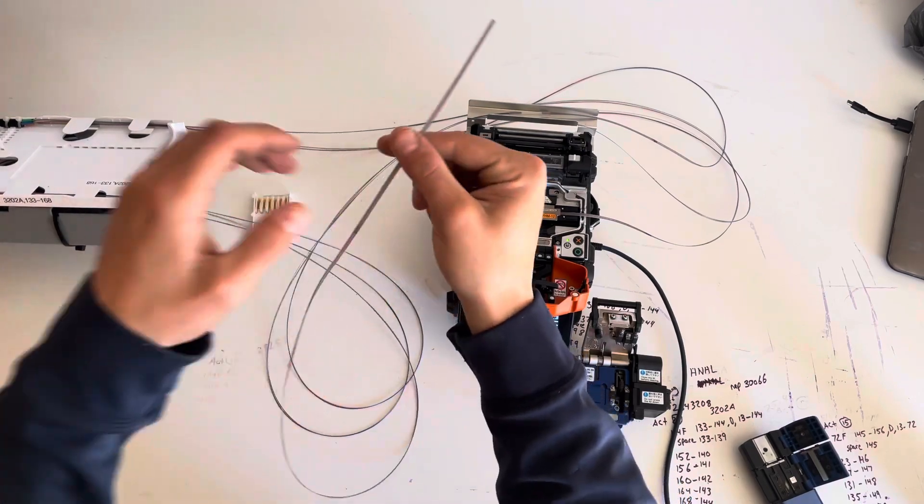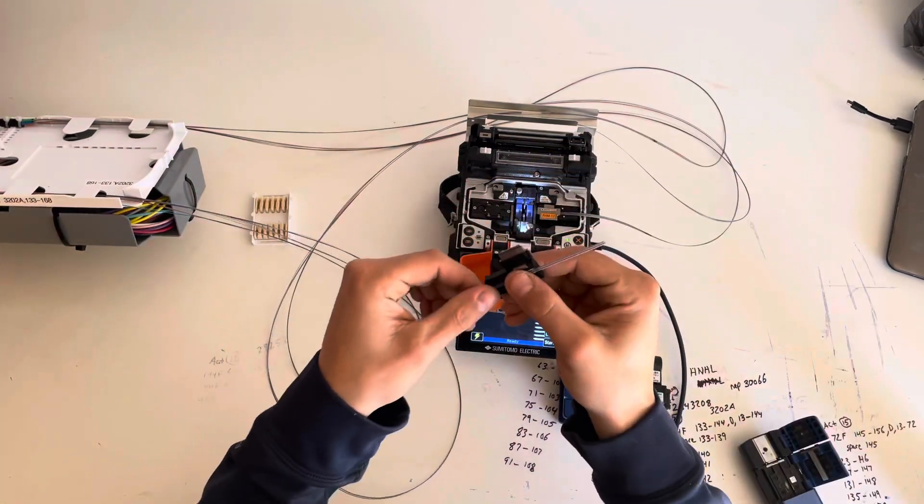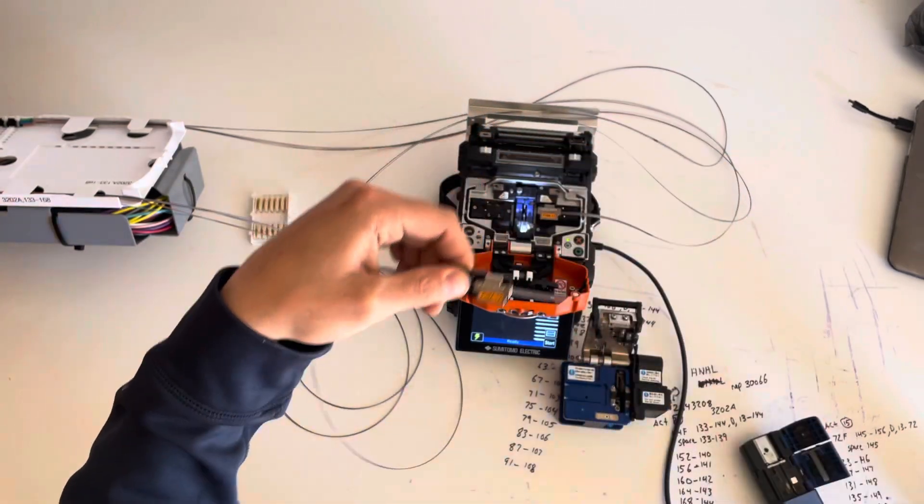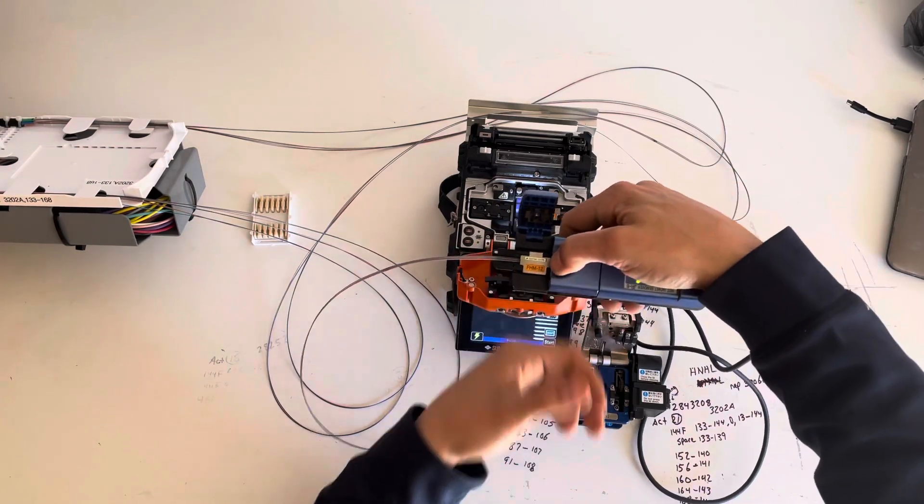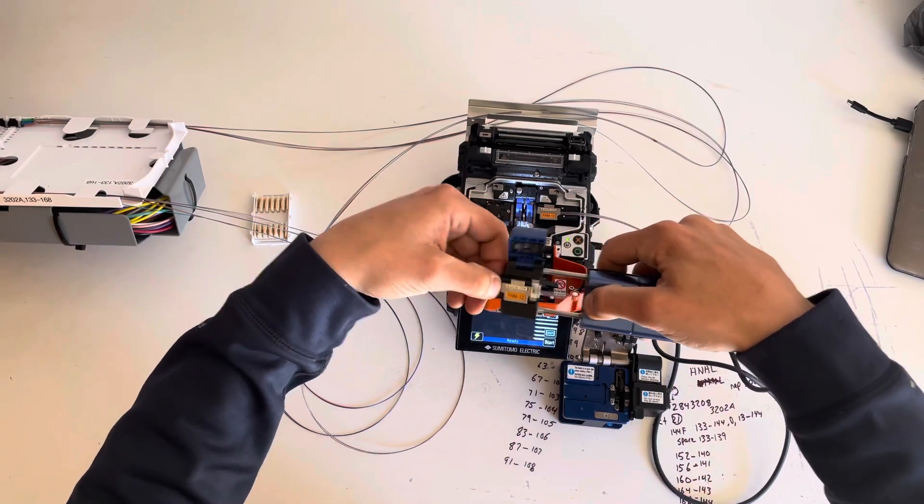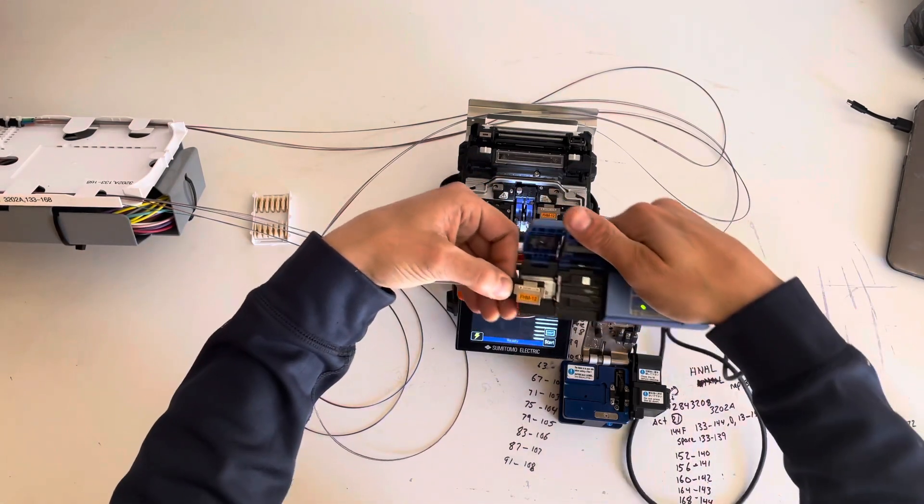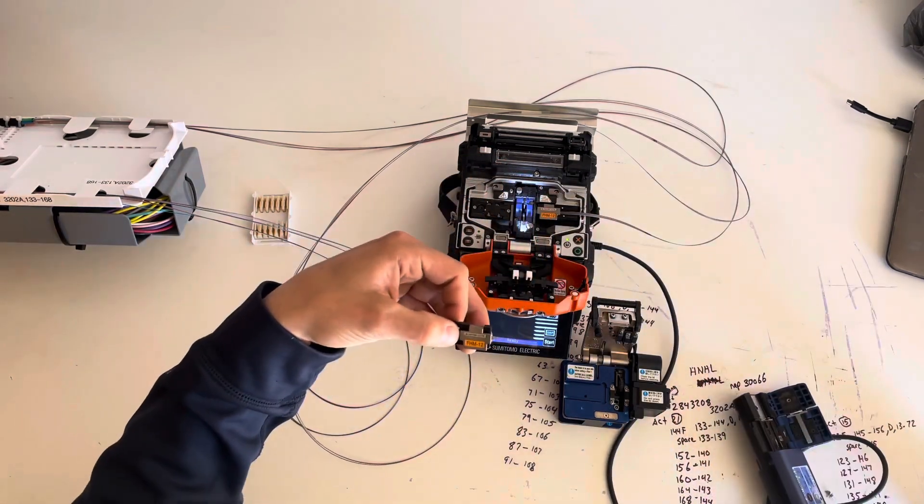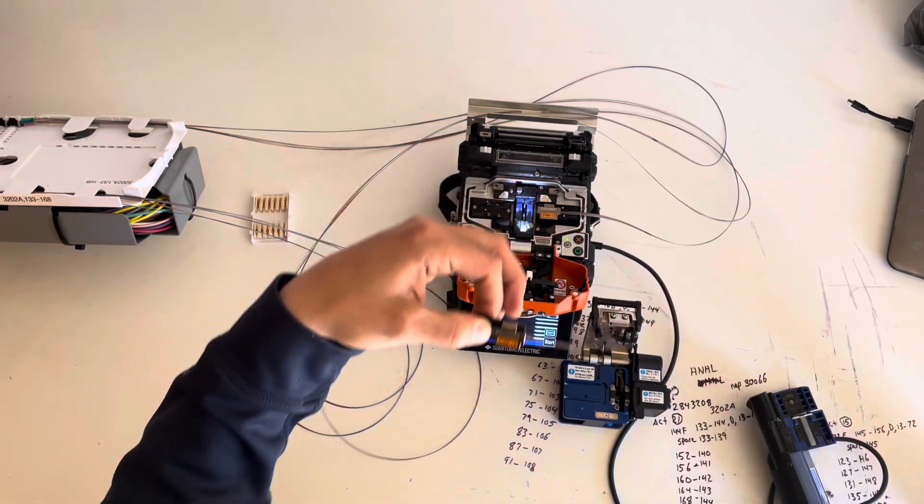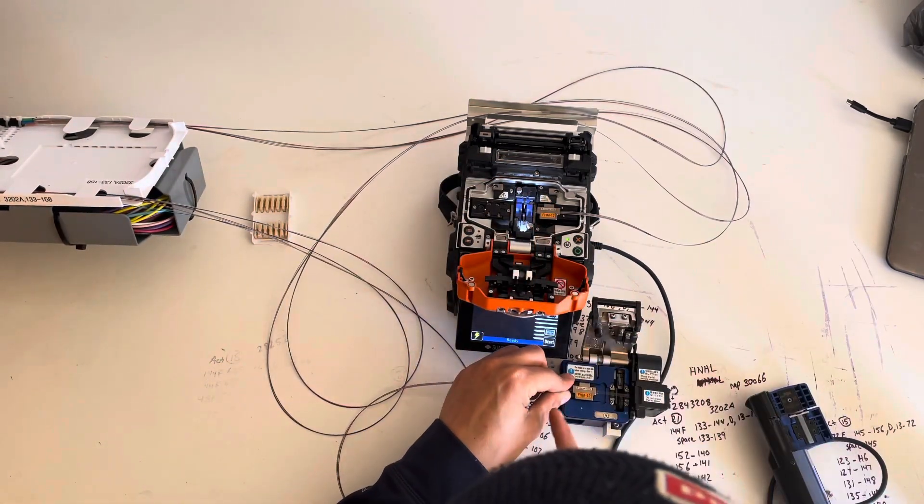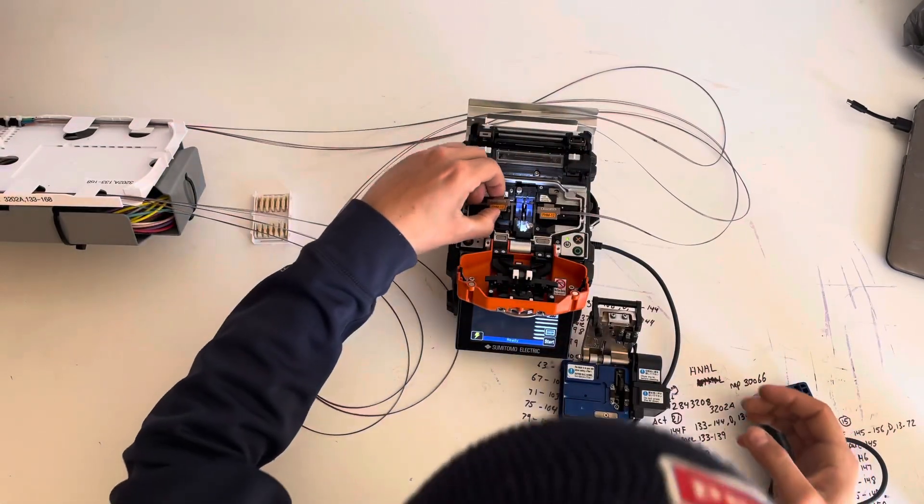Into the stripper. Solid light, firm grip. Not all the color came off, it's okay, give it another one. Third time's the charm. There we go. Get another alcohol wipe out, give that a good couple wipes. Into the cleaver, make sure there's no overlapping fibers. Cleave. Nice clean cleave into the splice machine.